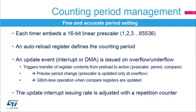For instance, a division by 80 will yield a precise 1 MHz counting rate when the APB clock is 80 MHz. The auto-reload register defines the counting period. In down-counting mode, the counter is automatically reloaded with the period value when it underflows. In up-counting mode, the counter rolls over and is reset when it exceeds the auto-reload value. An update event is issued when the counter underflows or overflows and a new period starts. It triggers an interrupt or DMA request used for adjusting time parameters synchronously with the period, which is useful for real-time control.